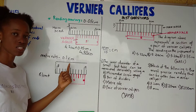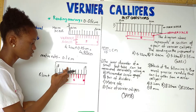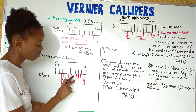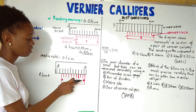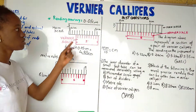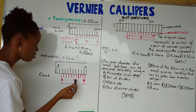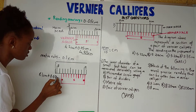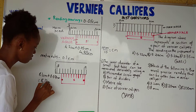Now, let's see the line that meets with a line on the main scale. None of these lines meet — this doesn't, this doesn't, this doesn't, this doesn't, this doesn't, this doesn't, this doesn't — but this one does. Counting: 5, 6, 7. The seventh line meets. So the value is 7, and we multiply it by the reading accuracy of 0.01 centimeters: 7 times 0.01 is 0.07 centimeters. Adding to 8.1 centimeters gives us 8.17 centimeters.